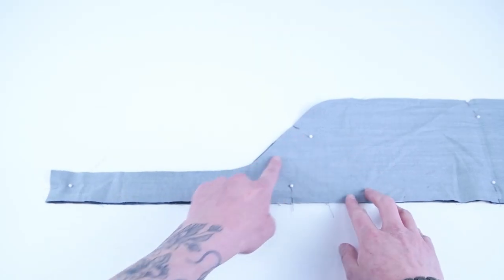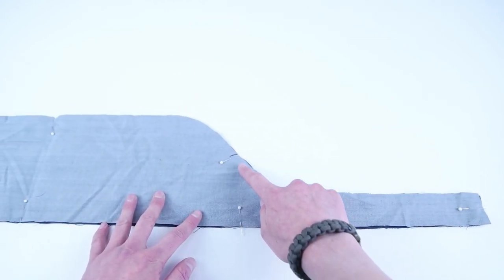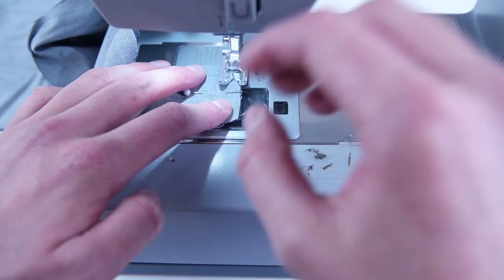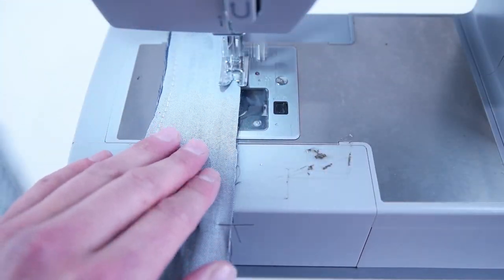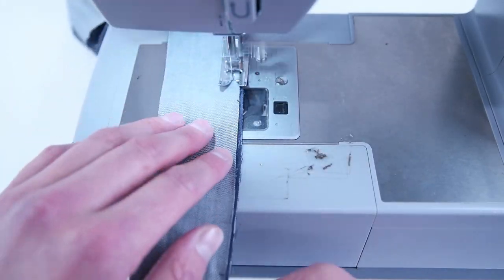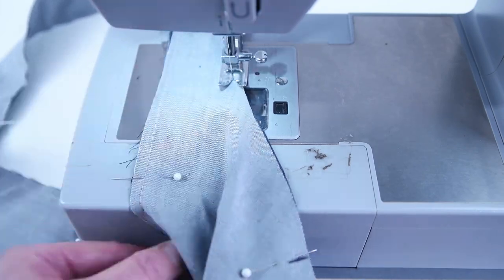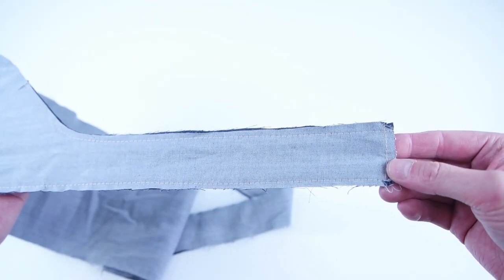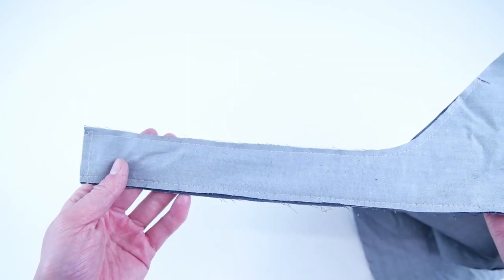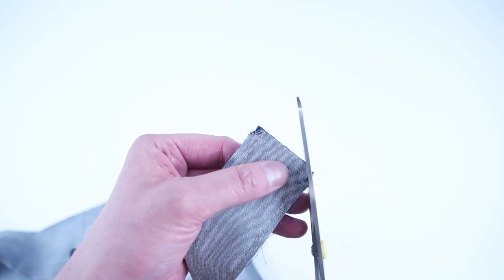And we're going to sew at a quarter inch all the way around the bottom outside edge, starting at one sew mark and ending at the other sew mark. Trim the corners on both sides to reduce the bulk.